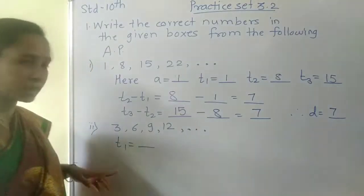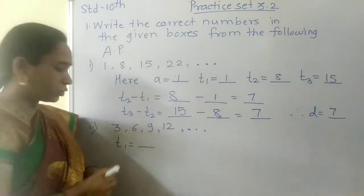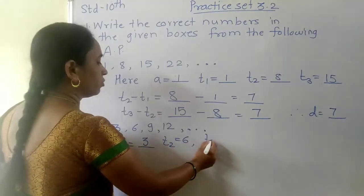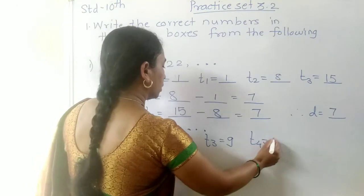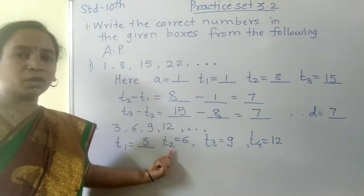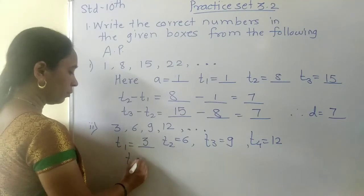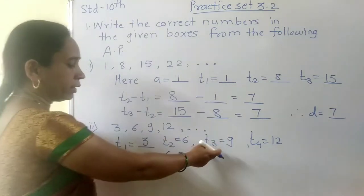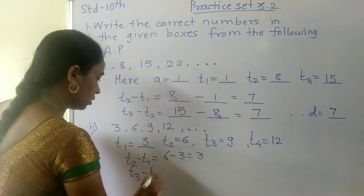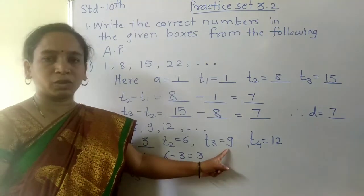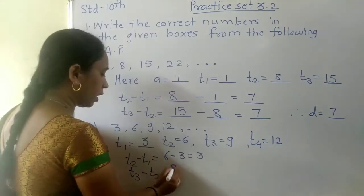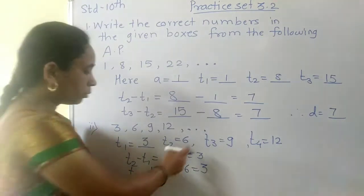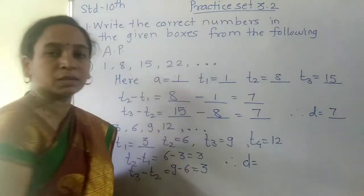For the next example: 3, 6, 9, 12. T1 equals 3, T2 equals 6, T3 equals 9, T4 equals 12. We take T2 minus T1: 6 minus 3 equals 3. Then T3 minus T2: 9 minus 6 equals 3. So in both cases D, the common difference, is 3.